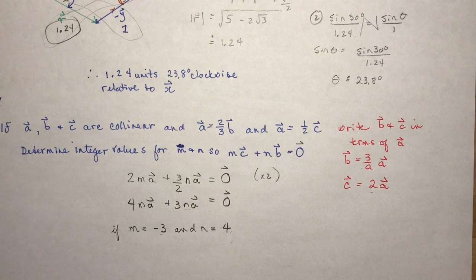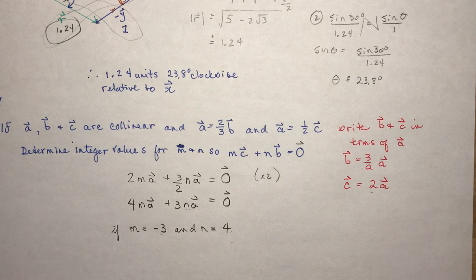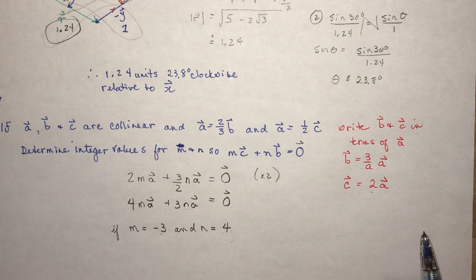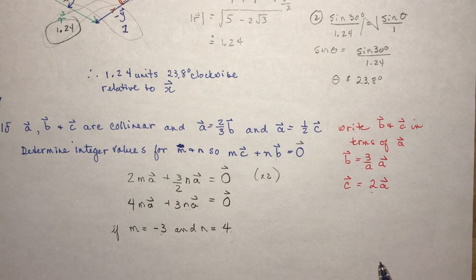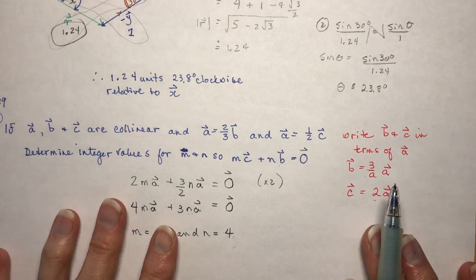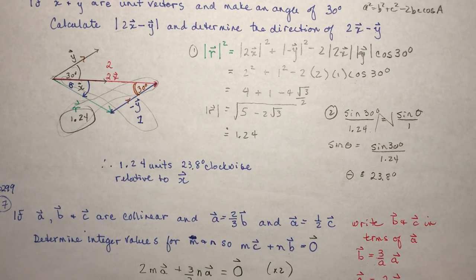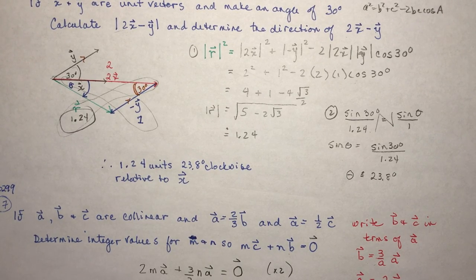That wraps up section 6.3. There's not a lot of computation here, but the terminology is what's most important: collinear — which gave my students trouble — means on the same line or parallel, used interchangeably. Unit vector is another key concept. Calculations like this one showed up on the final exam and many students didn't get it. Hope you're having a great day, and vectors is moving along fine for you. Bye for now.